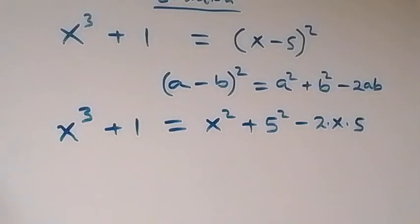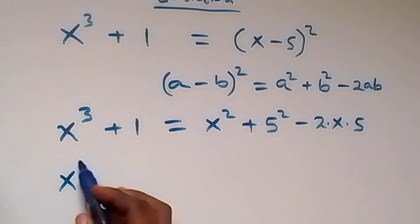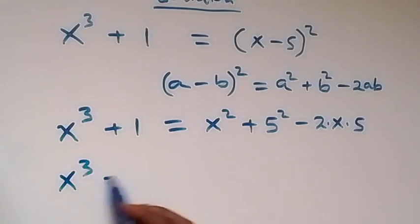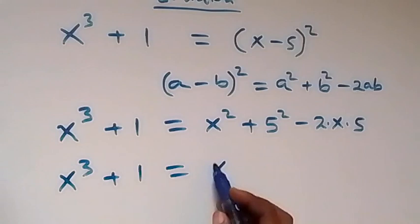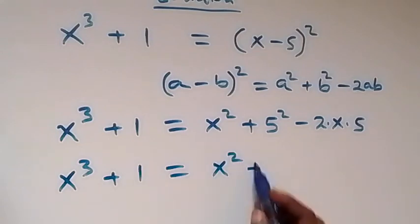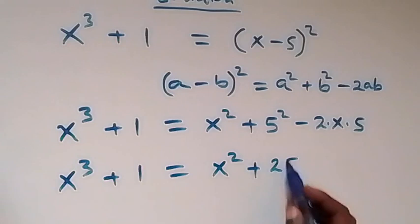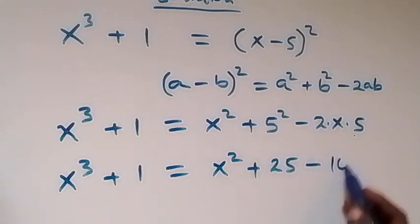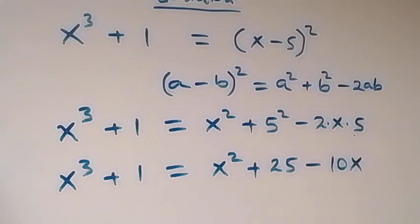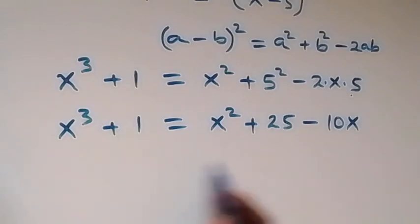Then from here we solve further. We still have x raised to power 3 plus 1, then equals to x square plus 5 square — that is 5 times 5 which is 25 — then minus 2 times 5, that's 10, so minus 10x. And here let's take everything to one side and rearrange.